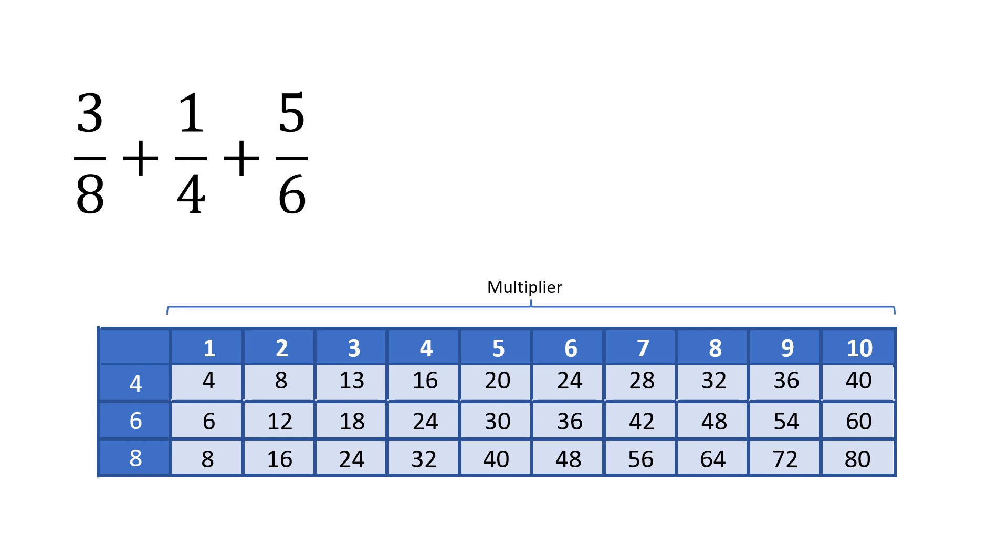The least common multiple of 4, 6, and 8 is 24.